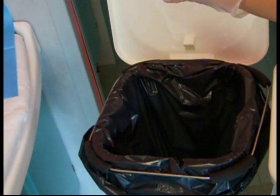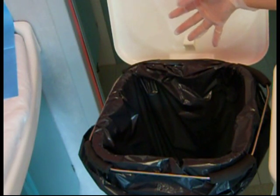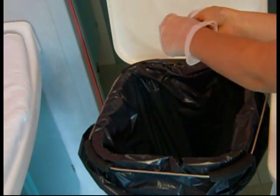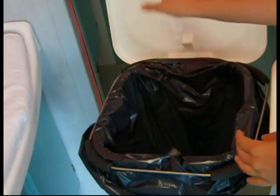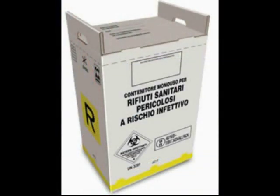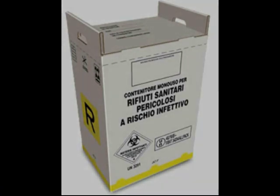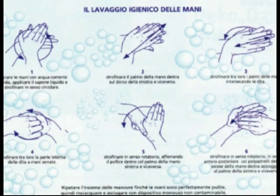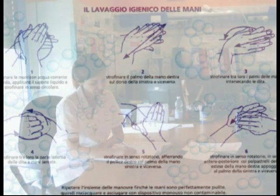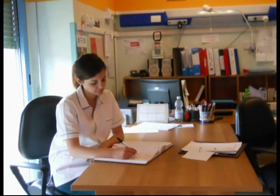Smaltire il materiale utilizzato nel contenitore dei rifiuti assimilabili agli urbani, a meno che non sia ravvisata clinicamente dal medico una patologia trasmissibile. In questo caso i rifiuti contaminati dovranno essere smaltiti nel contenitore dei rifiuti speciali. Eseguire nuovamente il lavaggio sociale delle mani. Infine registrare la procedura nella documentazione clinica in modo da certificare le prestazioni e riportare eventuali anomalie riscontrate.